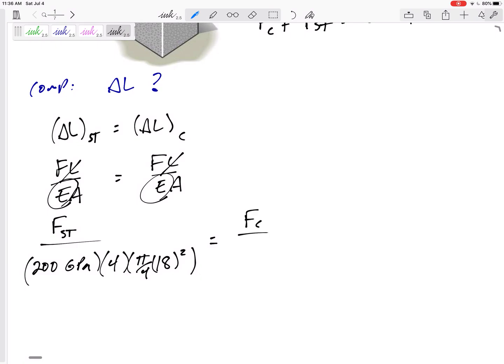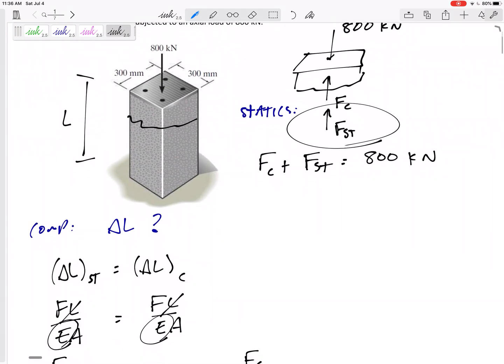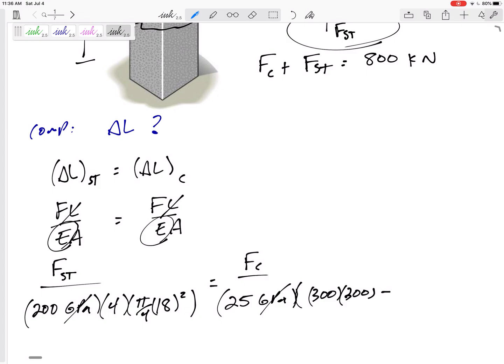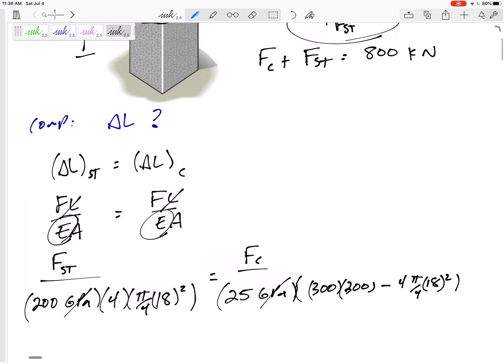On the right-hand side of my equation, I've got force in the concrete. The Ls cancel out. The E would be 25 GPa. So do you see how the GPAs cancel out? And then the area of the concrete. Now let's think about this. It's 300 by 300. But I need to account, I need to subtract out those steel, right? Four pi by four, 18 squared. Subtract out the area of the steel. So that would be the area of the concrete.